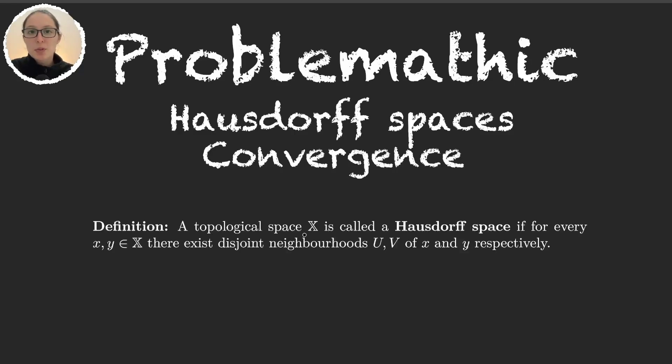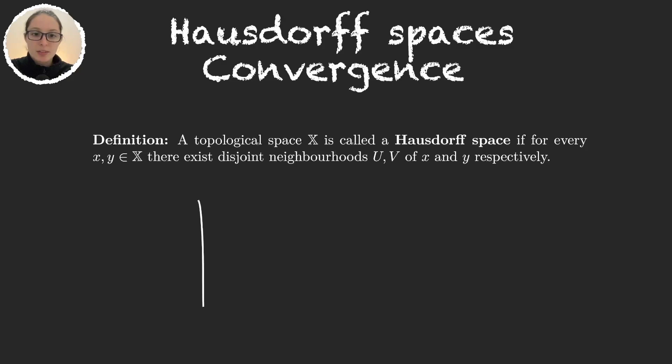Let's begin with the video. We say that a topological space X is a Hausdorff space if whenever we have two elements in the space there exist two disjoint neighborhoods of each of those points. So if my space, let's say that it's this one, this is X.